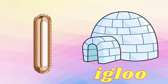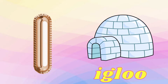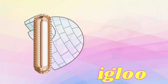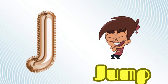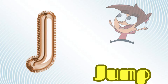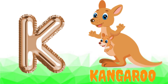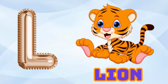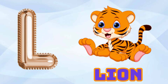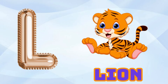I is for Igloo, I-I-Igloo. J is for Jump, J-J-Jump. K is for Kangaroo, K-K-Kangaroo. L is for Lion, L-L-Lion.